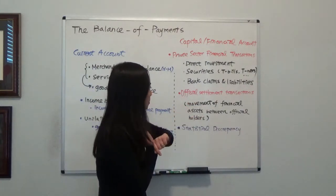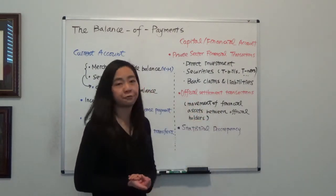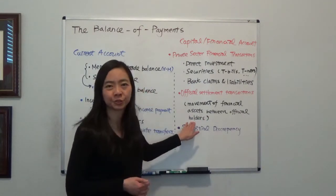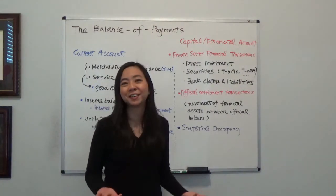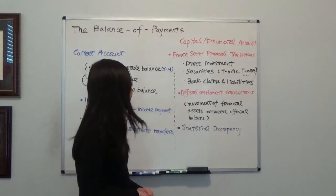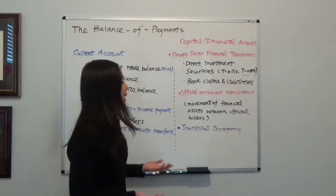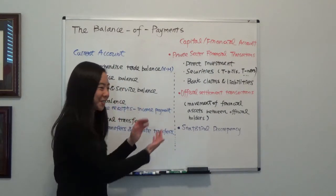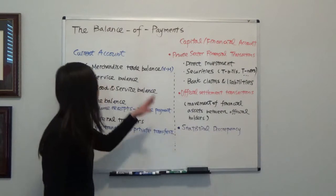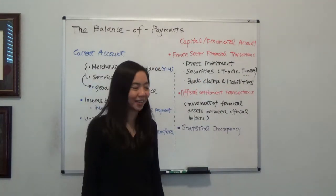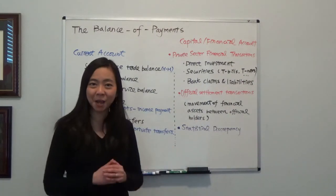Moving on to official settlement transactions. The definition is very simple — it's just a movement of financial assets between official holders, such as the Federal Reserve of the United States or the Bank of England, so basically the government. And finally, since there are millions of transactions, it is difficult to balance the balance sheet. Therefore, we have a statistical discrepancy item just to make sure that the current account is balanced with the capital and financial account. So that is the overview of the structure of our balance of payments. I hope this helps. I'll see you next time.